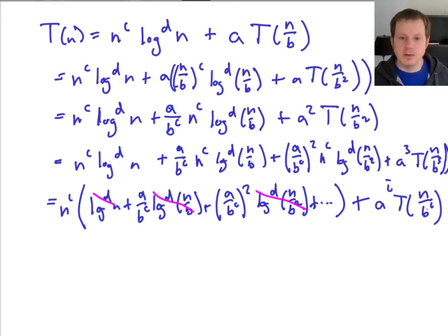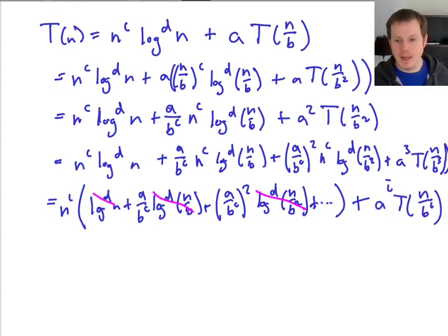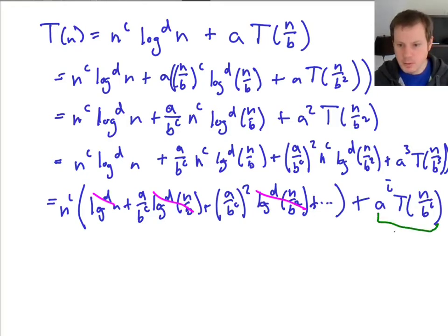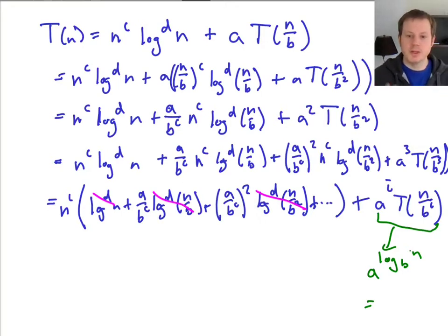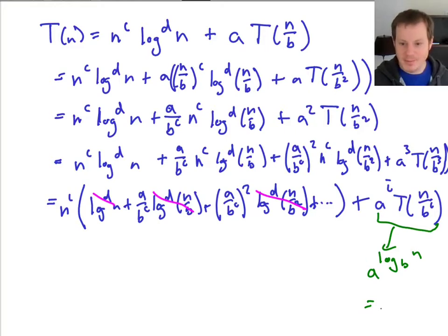This geometric series tells us how long the recursion needs to go down. Because we're dividing N by B to the I every time, the number of steps until we hit the base case is going to be log base B of N. So the last term becomes A to the log base B of N, and using the log trick where you can switch the base and the exponent, this equals N to the log base B of A.